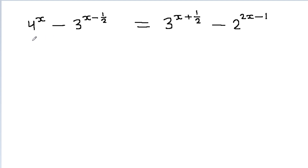In this video, we have a very nice equation and we have to solve it for x. You can pause the video and try it yourself first. The equation given is 4 to the power x minus 3 to the power (x minus 1/2) is equal to 3 to the power (x minus 1/2) minus 2 to the power (2x minus 1).